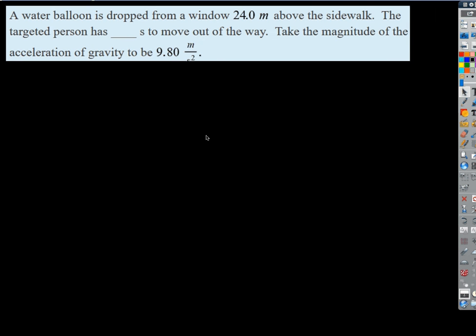How about one like that? Water balloon is dropped from a window 24 meters above a sidewalk. The targeted person has how many seconds to move out of the way? So let's make the assumption that it's 24 meters above the person's head, how about, instead of the sidewalk. That really technically probably should be that, right?